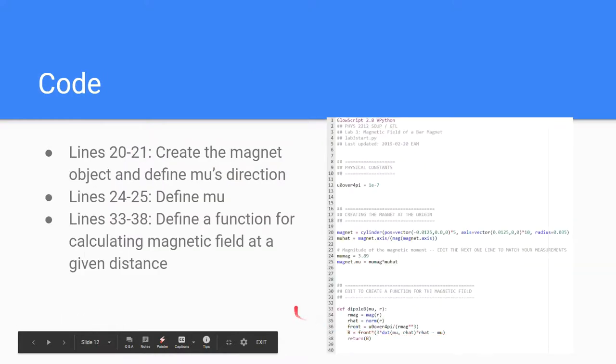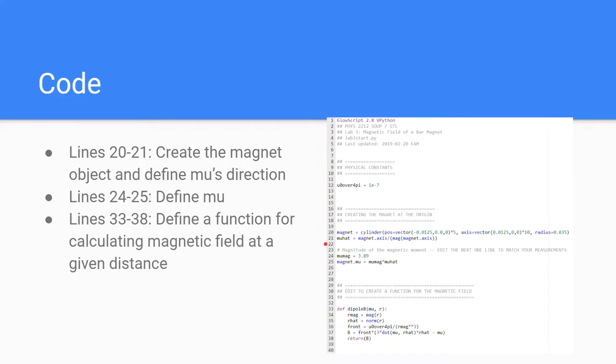Now, as for the code, on lines 20 to 21, we create the magnet and define mu's direction. Down here, we describe the magnitude of mu as measured on the last slide or calculated there and make a vector for mu. And down here, we have an equation for calculating magnetic field.